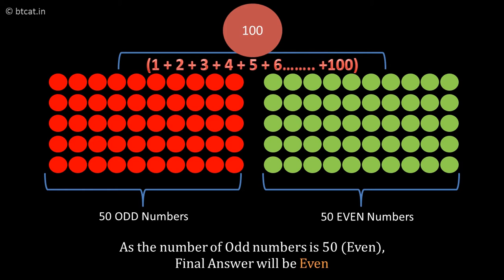We are only interested in the number of odd numbers in any sequence because that determines our answer. If the number of odd numbers is odd, it becomes odd + even. If the number of odd numbers is even, it becomes even + even. So in any sequence, we focus on counting odd numbers. Here, there are 50 odd numbers, so the net answer is even.